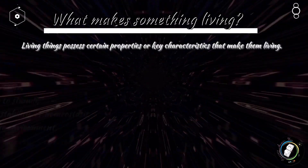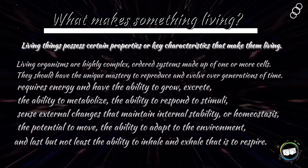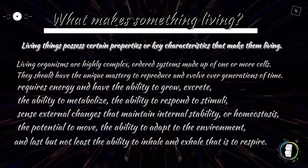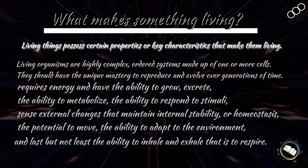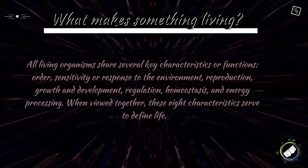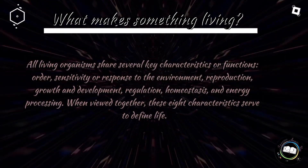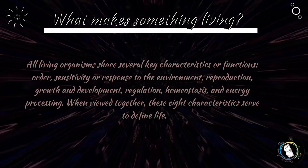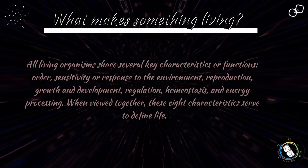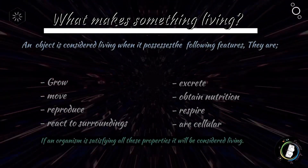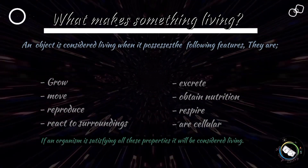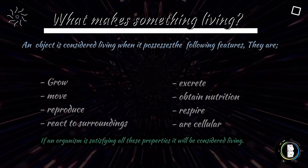A feature that could be used to decide whether something was living or not would be called a characteristic of living things. Certain features are common to all living things. They can grow, reproduce, react to surroundings, move, excrete, obtain nutrition, respire, and are cellular. An object must possess all these characteristics to be considered living; otherwise, it is not a living thing.